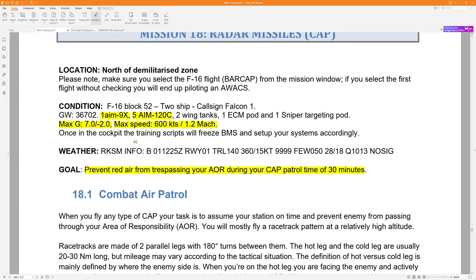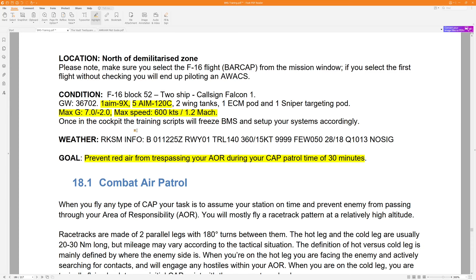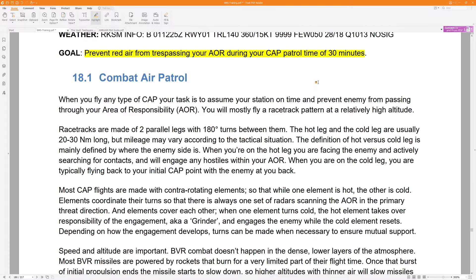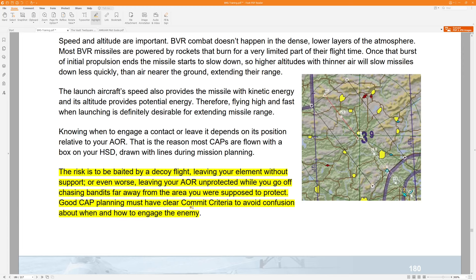You're in a two-ship of F-16, so you have to go up against two different two-ships of MiGs. You do have five AMRAMs and some fuel tanks, a jammer, and a targeting pod. The goal is to prevent red air from trespassing your area of responsibility during your combat air patrol time of 30 minutes. You must have clear commit criteria to avoid confusion about how and when to engage the enemy.